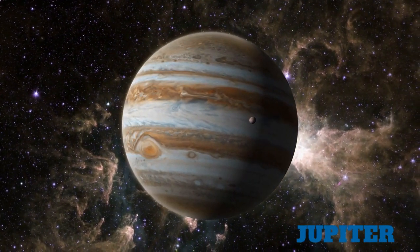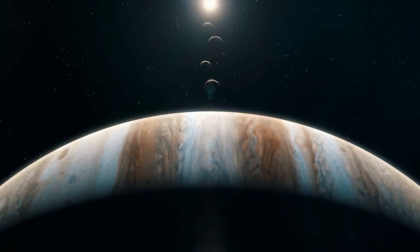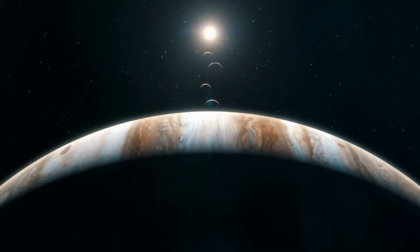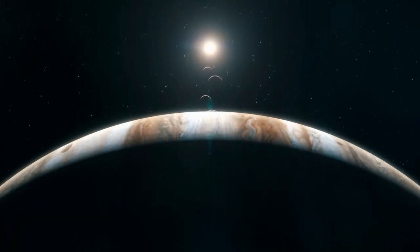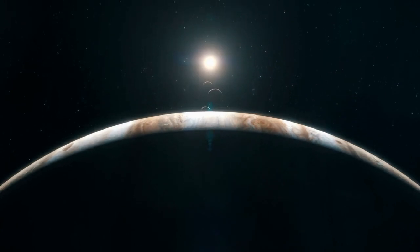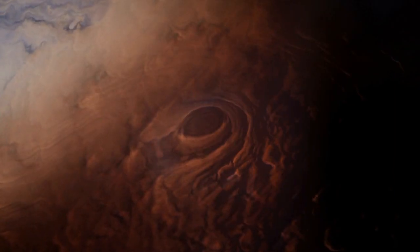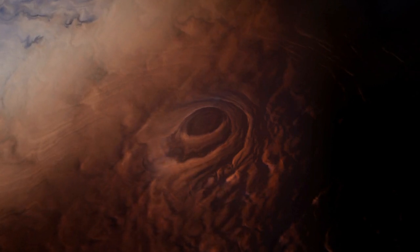Jupiter, the king of planets, is the fifth planet from the Sun. It's by far the largest planet in the solar system, at more than twice the size of all the other planets combined. Jupiter's great red spot is a giant storm, bigger than Earth, that has raged for hundreds of years.